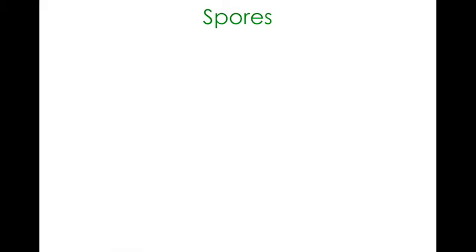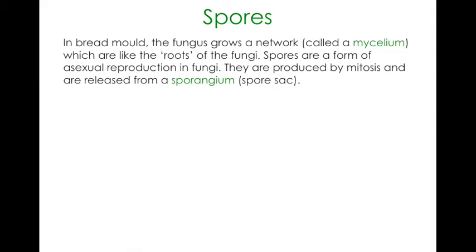The last one is spores. We've already covered this, so I won't spend too long on it. Fungus will grow through a network called the mycelium — like the roots or fibers of it — and it's all asexual reproduction. They are produced by mitosis and released through a spore sac called a sporangium. That's your mycelium network below the bread, and then they sprout these new sporangiums which release the spores, and they will then colonise new pieces of bread and things like that. So that's an overview of all the asexual reproductive methods in eukaryotes. I hope you guys enjoyed that — I'll catch you guys later. Bye.